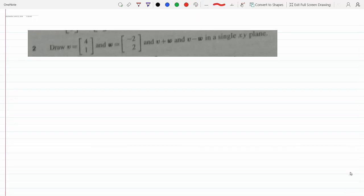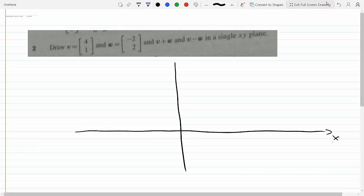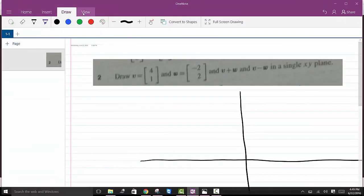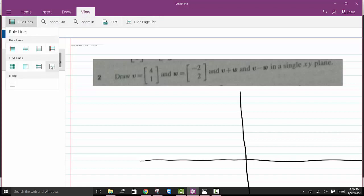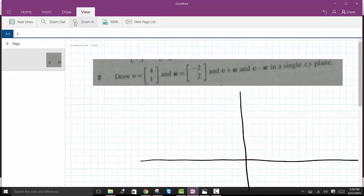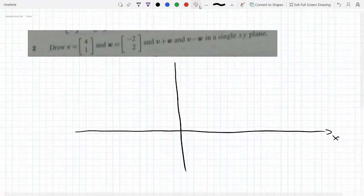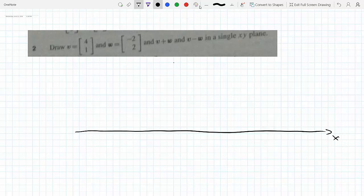To draw V and W, we have the two vectors with their components, so it's straightforward to graph them. This is the y-axis and this is the x-axis. Let me change this to a mathematical graphing view, probably better. So this is the y-axis and this here is the x-axis.